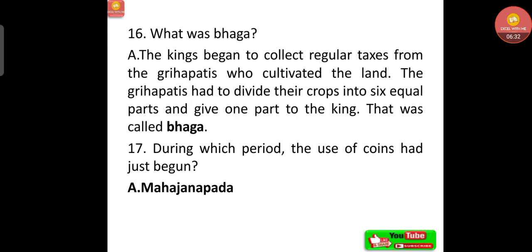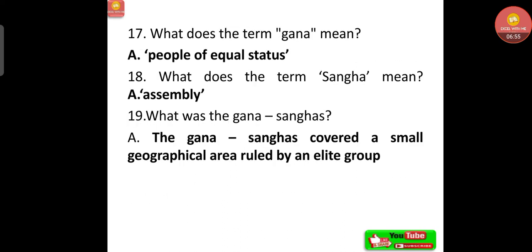The kings began to collect regular taxes from Grihapathis who cultivated the land. Grihapathis had to divide their crops into six equal parts and give one part to the king — this was called Bhaga. The use of coins had just begun during the Mahajanapada period.